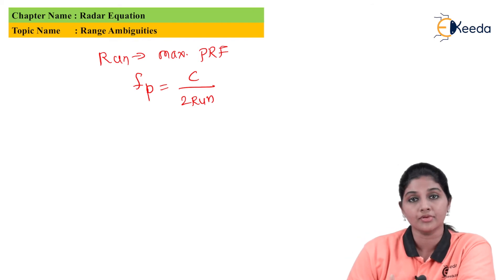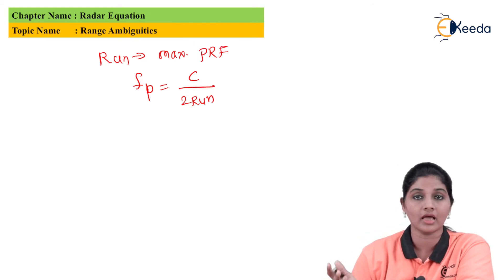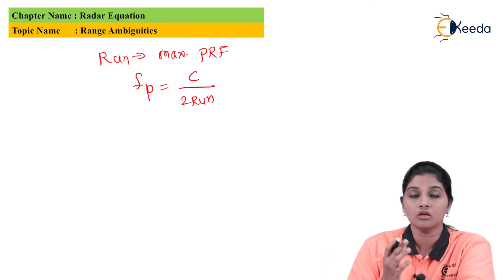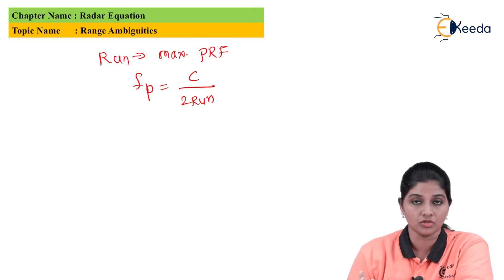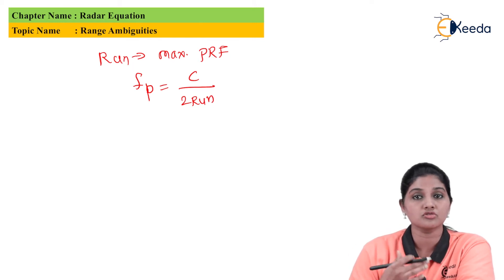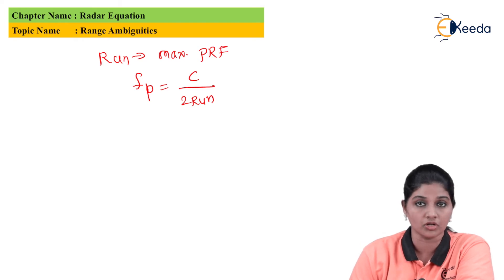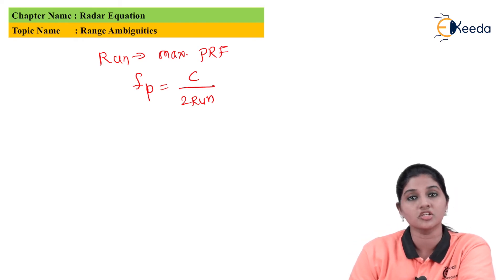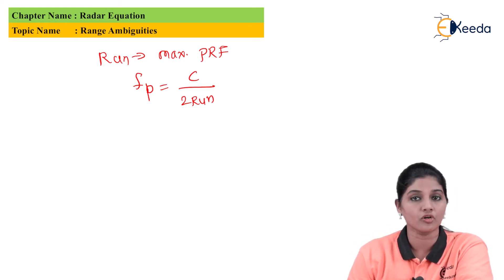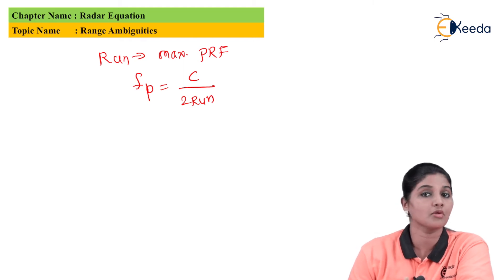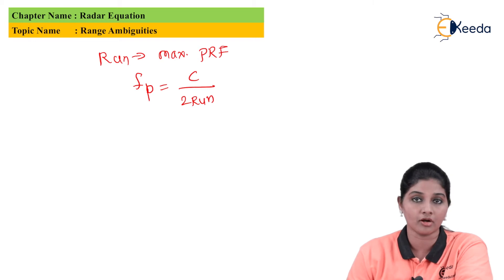It may happen that sometimes the echo signals obtained from a target as a reflected signal may take more time, or may come from a range beyond the unambiguous range, because of the presence of objects, environmental conditions, or large mountains. In that case the normal range increases beyond the horizon and the echo signal becomes a second time around echo or multiple time around echo.